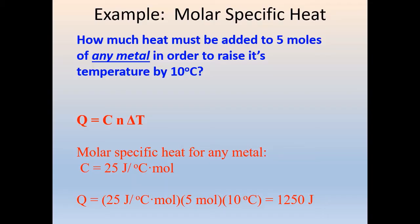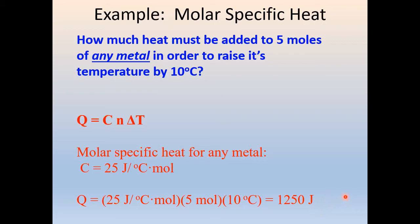Here's an example of molar specific heat: how much heat must be added to five moles of any metal to raise its temperature by 10 degrees C? Using Q equals big C times N times delta T, and remembering that the molar specific heat for any metal is 25 joules per degree C per mole, we have Q equals 25 times 5 moles times 10 degrees C. Multiplying these three numbers together — 25 times 5 times 10 — gives 1,250 joules.